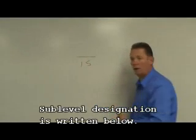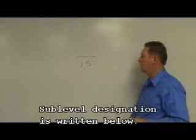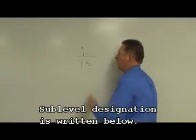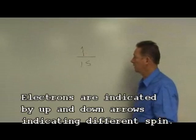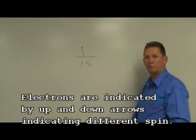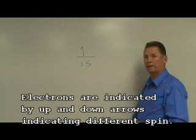So, if I'm dealing with the 1s orbital, I'll write the 1s down below it. If I put an electron in it, I will represent it this way. Now, you'll recall that the Pauli exclusion principle says that we can only put two electrons into any given orbital.